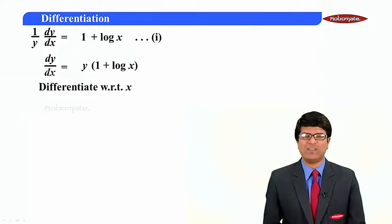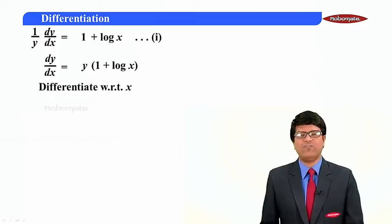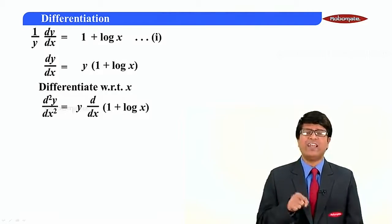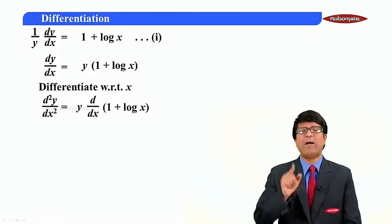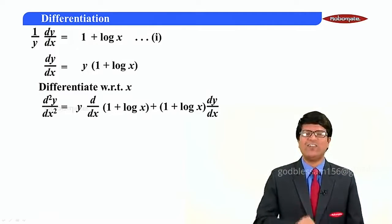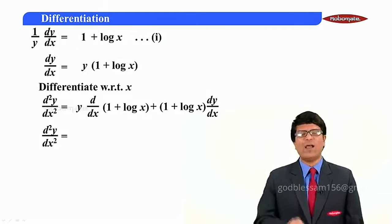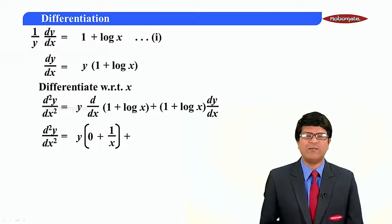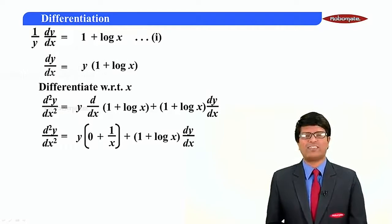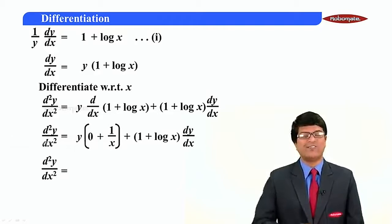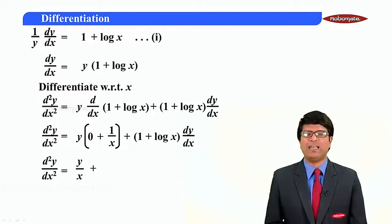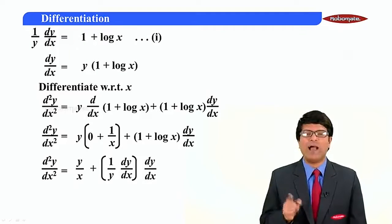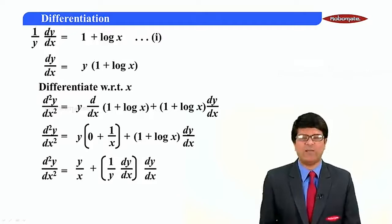Let us differentiate with respect to x. Derivative of dy/dx is d²y/dx². Using the product rule: y times the derivative of (1 plus log x) plus (1 plus log x) times the derivative of y. So d²y/dx² equals y·(0 + 1/x) plus (1 plus log x)·(dy/dx), giving d²y/dx² equals y/x plus (1 plus log x)·(dy/dx). From step one, (1 plus log x) equals (1/y)(dy/dx), so substituting gives d²y/dx² equals y/x plus (1/y)(dy/dx)·(dy/dx).